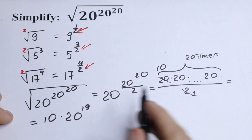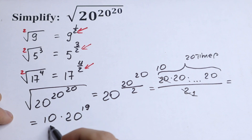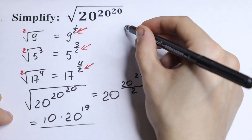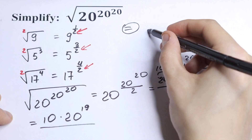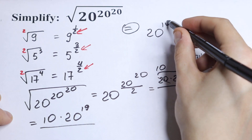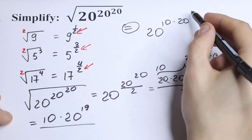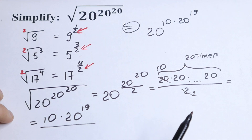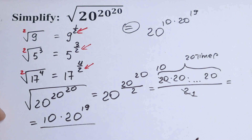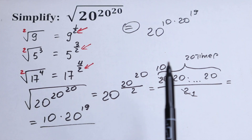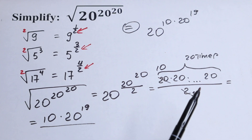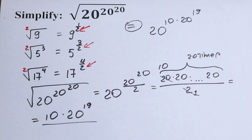We cancel it over 1, so this will be our answer: 20 to the power 10 times 20 to the power 19. If you agree with this method, or if you disagree, or maybe you have a faster method to solve this, write your suggestion in a comment — it will be really interesting to read it. Thank you for watching and see you in the next videos.